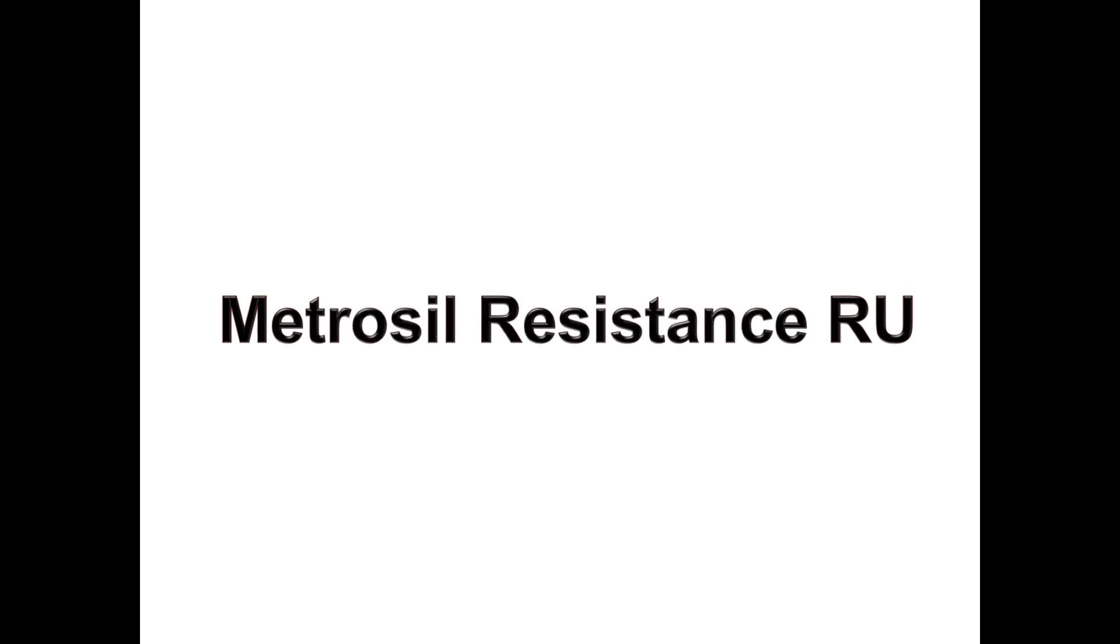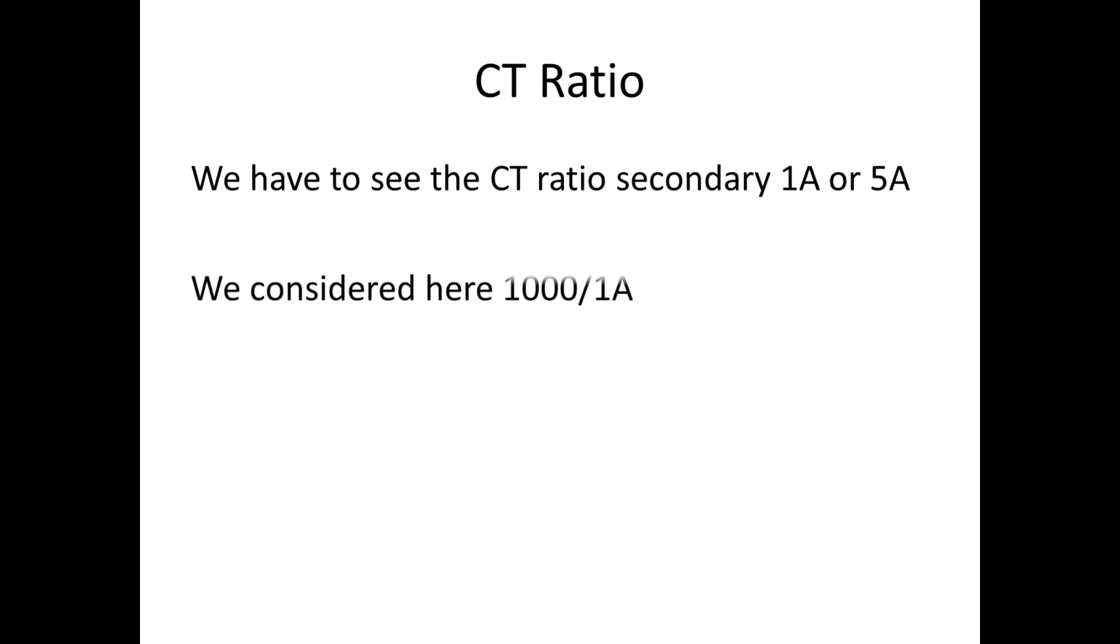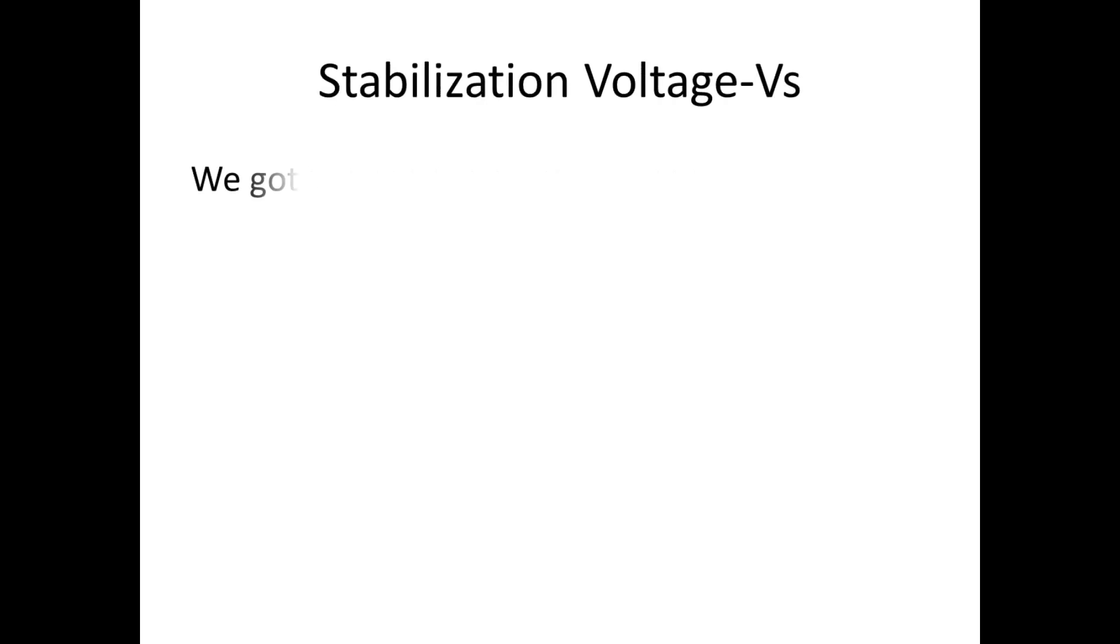Now, we are going to select the metrosil resistor. For selecting of this resistor normally we have to consider these six points. This point we will see one by one. First, CT ratio. Whether the CT ratio secondary is 1 amp or 5 amp. Here we are considering secondary 1 amp. Second, we have to see the stabilizing voltage VS. Here we got VS is equal to 106V.